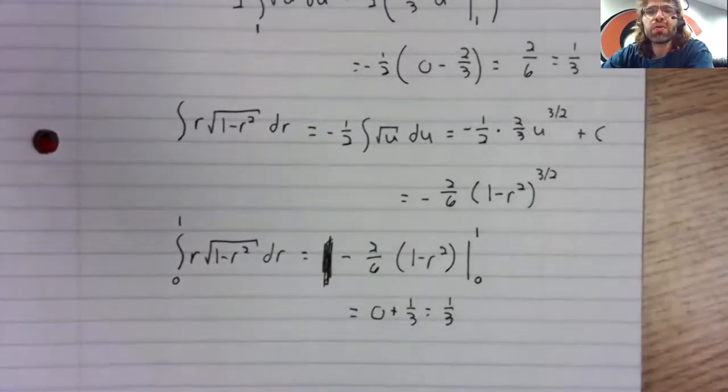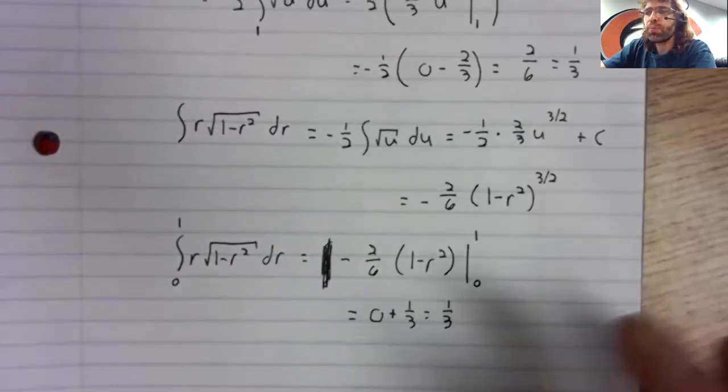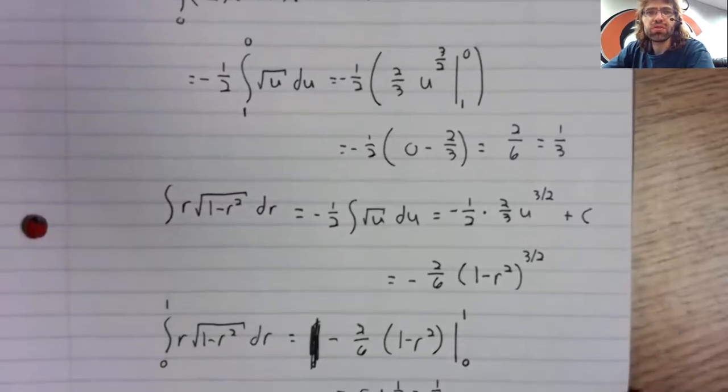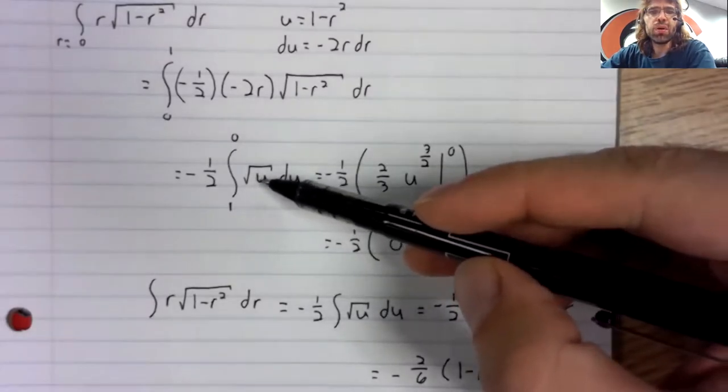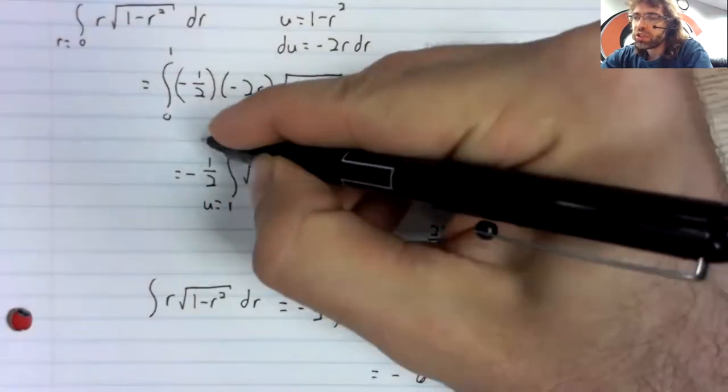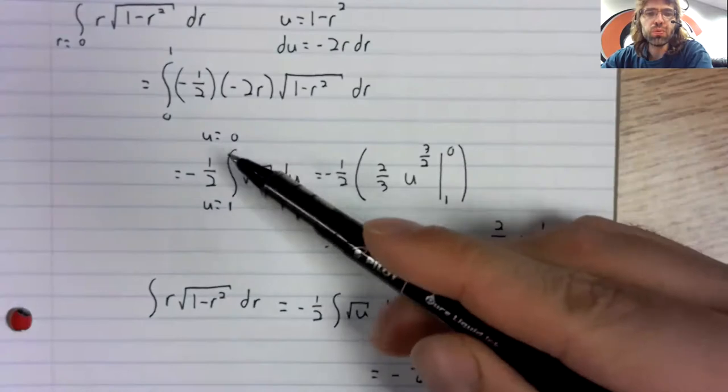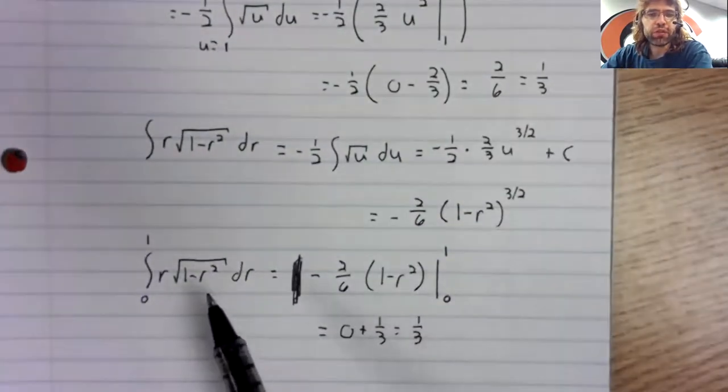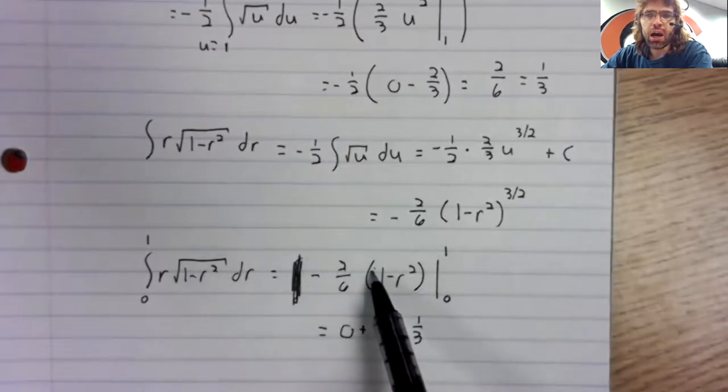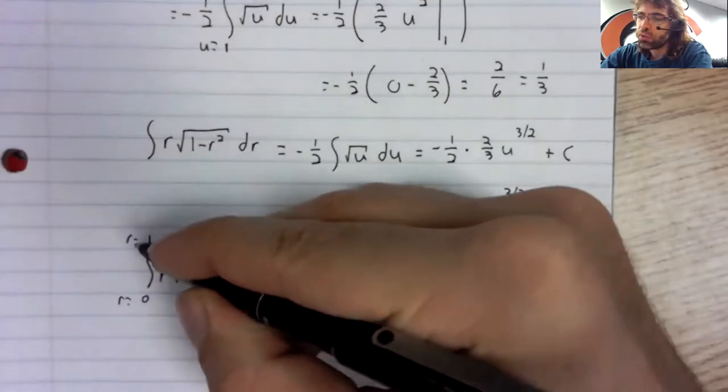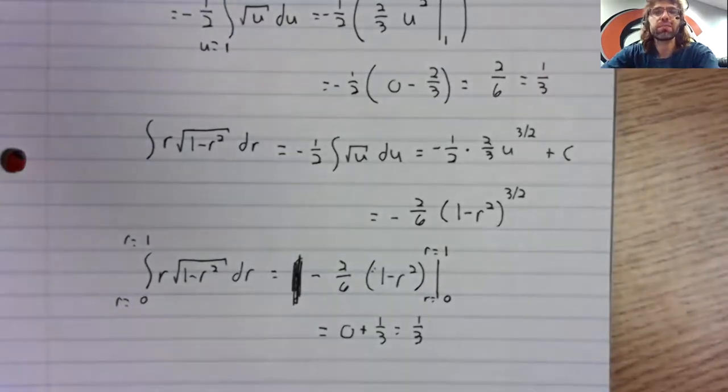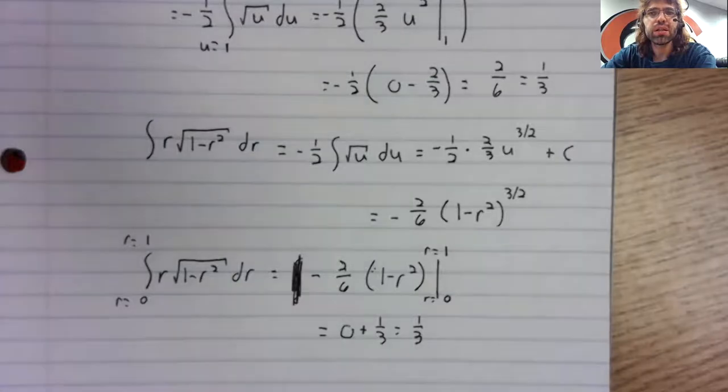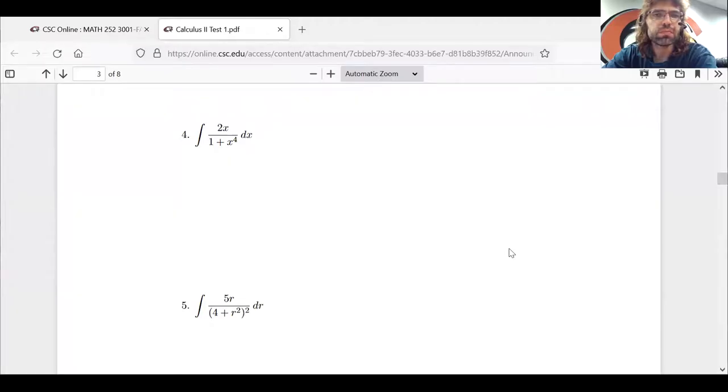So it's just a matter of making sure your limits match up with your variables. If our variable is going to be u, our limits have to be telling us what u is doing. If our variable is going to stay r, our limits should tell us what r is doing. And now, back to the test.